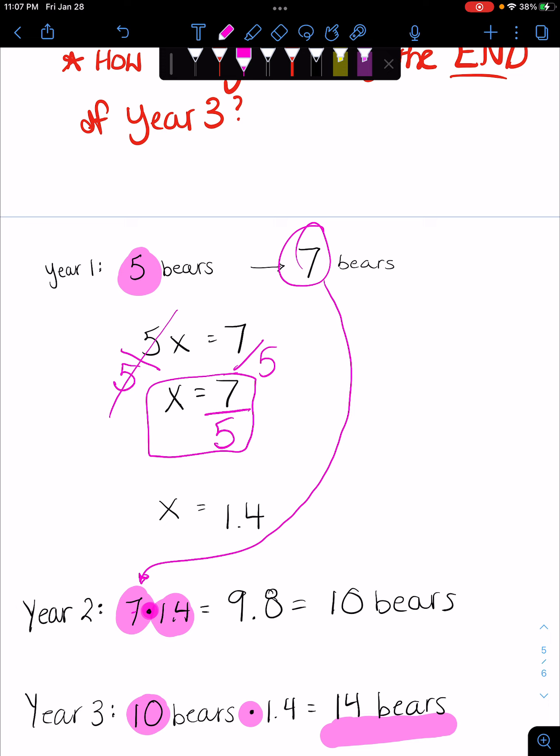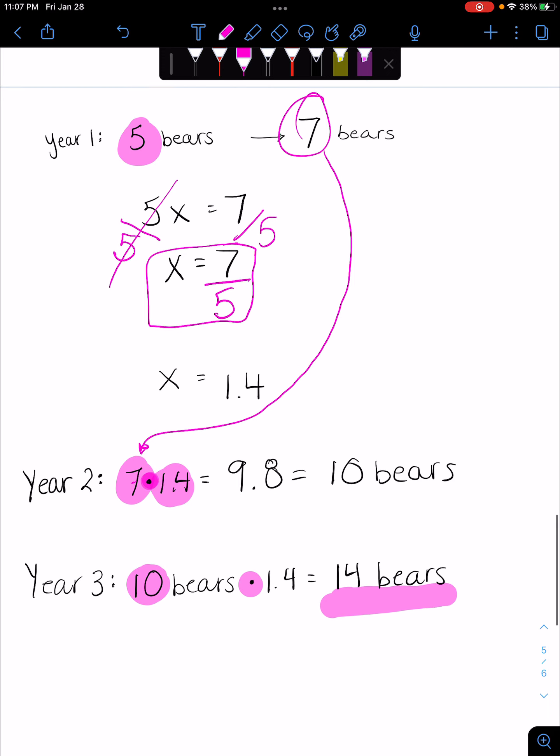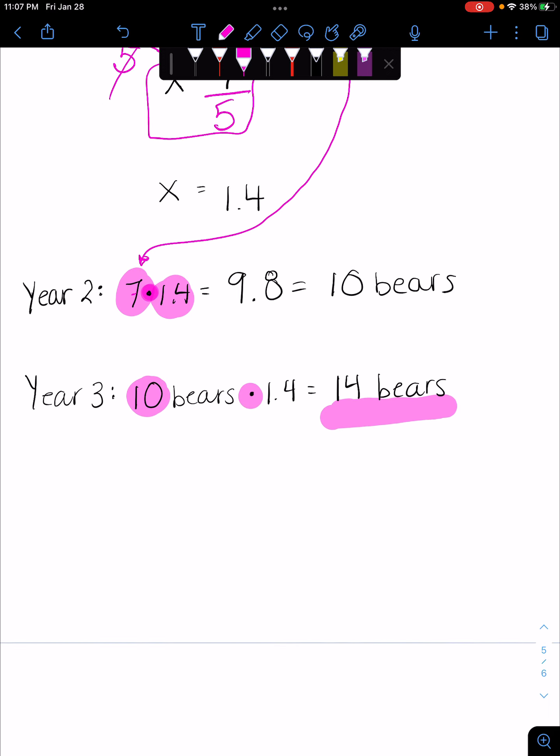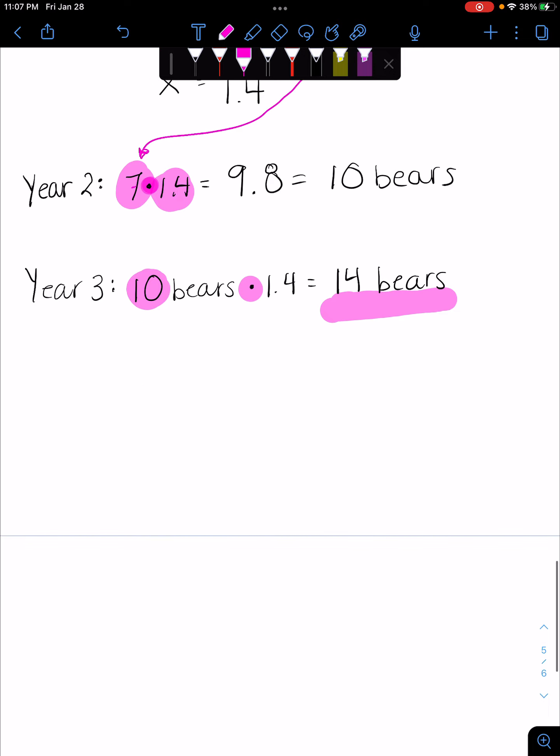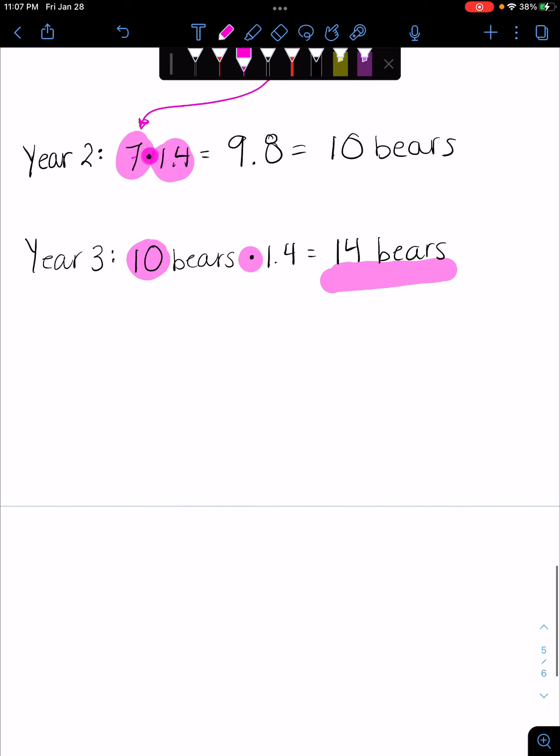So we'll plug this back into the next year: 10 bears times 1.4 equals 14 bears. That's the amount of bears we have at the end of year three. However, what about if we added a bear in? So we added a bear in. So what does that look like?